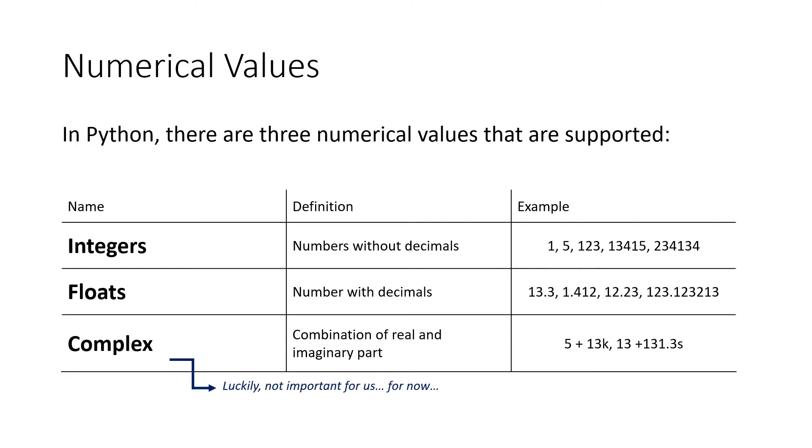First, the numerical values. In Python, there are three numerical values that are supported. The first one is integers. Integers are numbers without a decimal point. It doesn't matter what kind of number, as long as it does not have a decimal point, it is always an integer. Our example here is 15, but it also can be 13,450 for example.